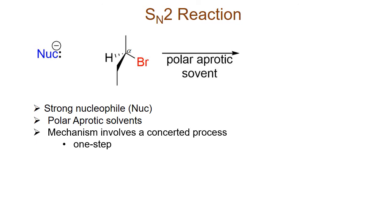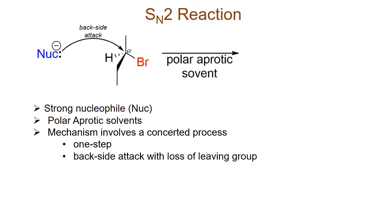In the particular example above, the nucleophile does a backside attack at the alpha carbon of the alkyl halide with a simultaneous loss of the leaving group. This results in the formation of our product where the nucleophile is now connected to the alpha carbon and the halogen is lost as a halide ion.